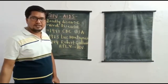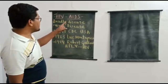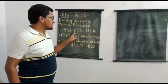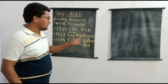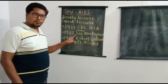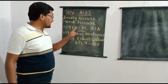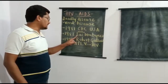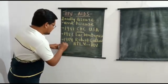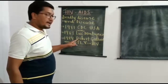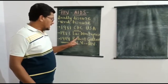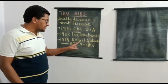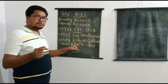HIV AIDS is a viral disease, a transmissible disease, usually transmitted from one person to another by unprotected sex etc. The first case of HIV was diagnosed at CDC — Center for Disease Control — in the USA in the year 1981. The causative virus of HIV AIDS was first isolated from the blood of a patient by Leutmantanir in the year 1983. In 1984, this virus was identified as a retrovirus and was initially named HTLV.